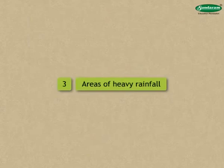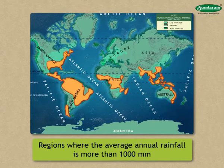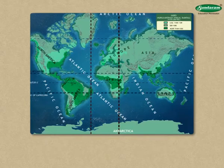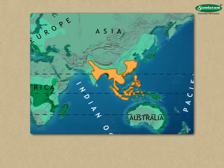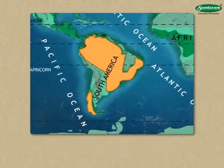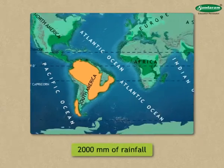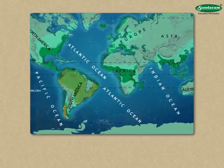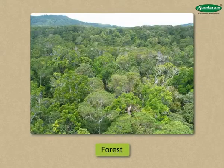Areas of heavy rainfall: Regions where the average annual rainfall is more than 1000 mm fall into this category. The region up to 20 degrees north and south of the equator receives heavy rainfall. Within this belt, Southeast Asia, parts of the Indian subcontinent, Central Africa, and the Amazon Valley in South America receive more than 2000 mm of rainfall. Besides these, beyond 20 degrees north and south latitudes, South America, Southeast China, and the southeastern part of the United States are also areas of high rainfall. Forest is the main vegetation type here.